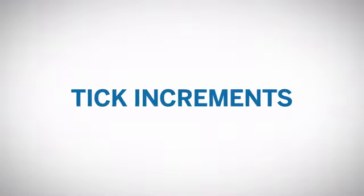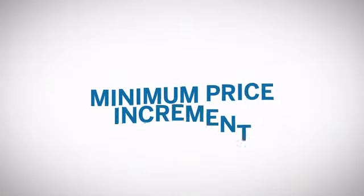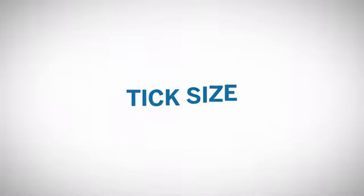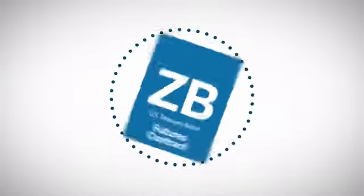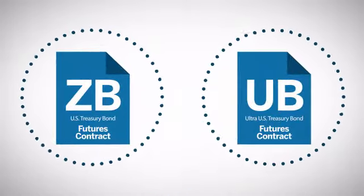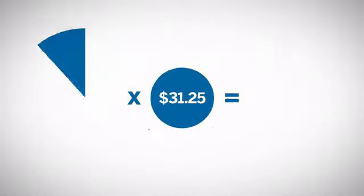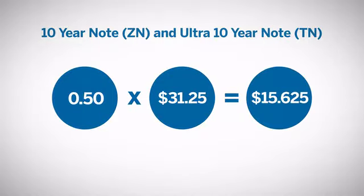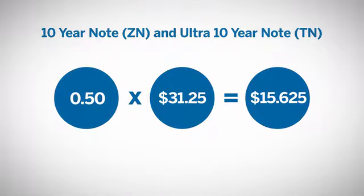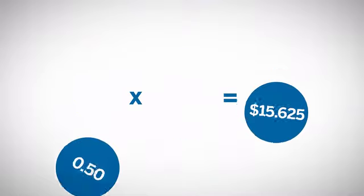Tick Increments: The biggest difference between all the products is the minimum price increment, or tick size. The original U.S. Treasury bond and ultra-bond futures contract have a minimum price fluctuation of 1/32 of a point, or $31.25 per contract. The 10-year note and ultra-10-year note futures minimum tick increment is half of 1/32; therefore, the minimum price change would be 0.50 times $31.25, equaling $15.625, rounded to the nearest cent per contract.